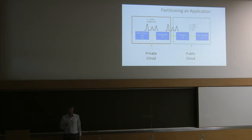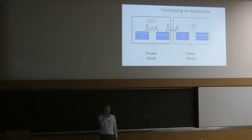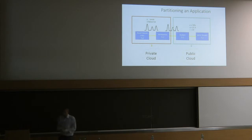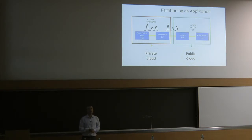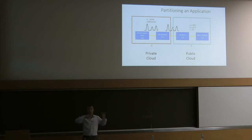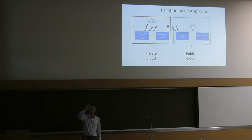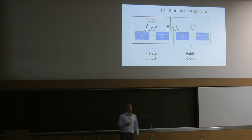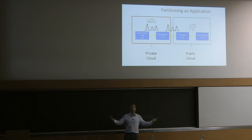We did this manually — sat around with application experts at a whiteboard and worked out how to partition it, then a programmer implemented it. But it made us nervous. What if we made a mistake and some secure data was accidentally sent to a public cloud? Also, this is a very simple workflow — sometimes we have workflows with 20 different services, lots of different sorts of data with different security levels, making it much more difficult to decide how to partition. There can also be multiple valid options for partitioning, so how do you decide which is best?